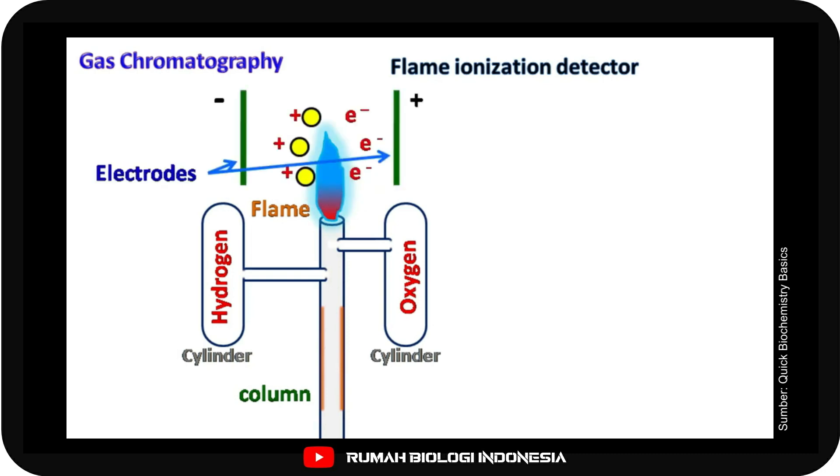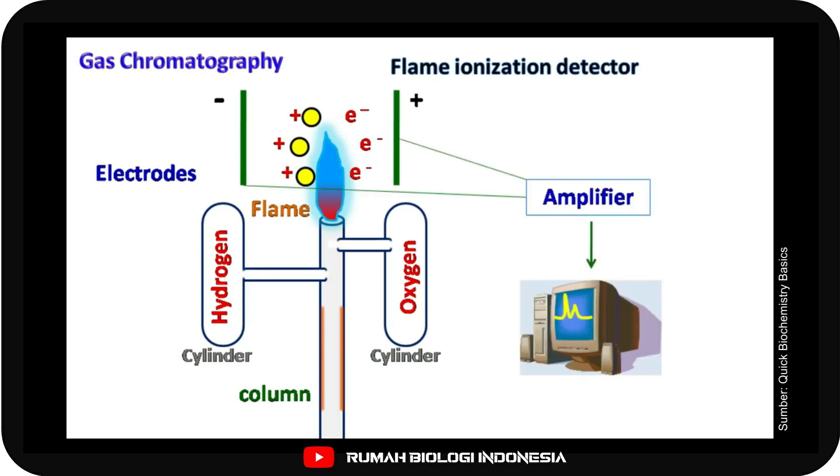Across the flame, there are two electrodes, each with a positive and a negative charge. The electrodes detect the electrons generated by the ionization of the sample. Electrons are detected in the form of current which is amplified and detected by the computer.